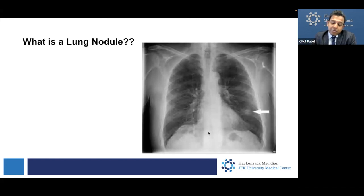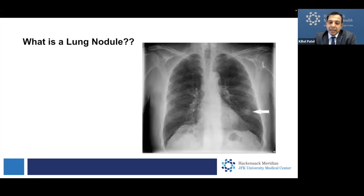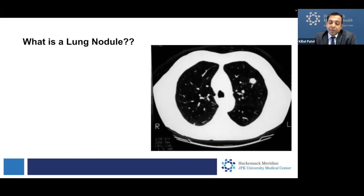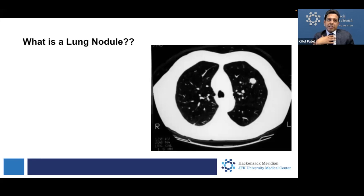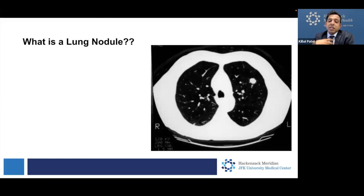Over here, you can see it's not completely black — there's a white spot, and that is a lung nodule. When you do a chest x-ray, we are only taking one picture of your chest. Sometimes you might get a CAT scan. What we do in a CAT scan is take pictures of your chest and slice you like a loaf of bread — it sounds a little morbid, but that's exactly what we do. It gives us a better idea of what's happening inside your lungs.